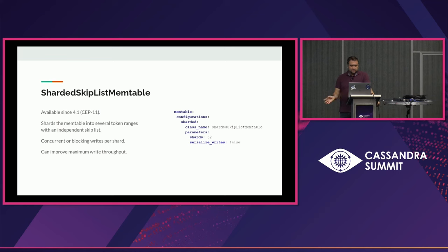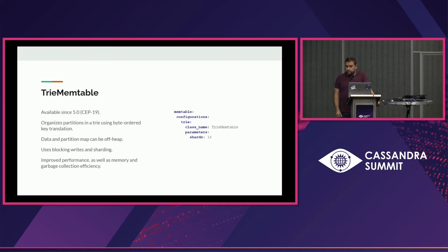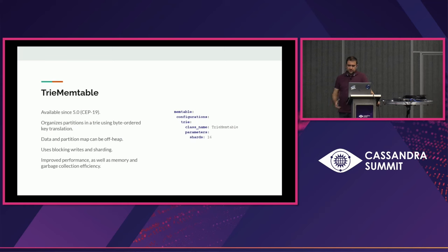The third and most important new addition is the trie memtable, coming with Cassandra 5. It's a very different implementation — instead of using a skip list for the partition map, it uses a trie, which is a different data structure. It aims to solve many of the problems of the legacy skip list solution. If you switch to it, you're expected to get much better performance as well as garbage collection efficiency.